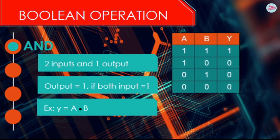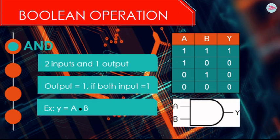This is the truth table for AND Boolean operation. As you can see here, if both of the input A and B are one, then the output Y will be equal to one. But if one of the input are zero, then the output will be zero. And this is the symbol of AND operation logic gate.